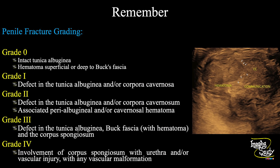The take-home message: there are five grades of penile fracture. On grade 0, there will be intact tunica albuginea and you will see hematomas superficial or deep to Buck's fascia. On grade 1, there will be a defect in the tunica albuginea and corpora cavernosa. On grade 2, like our case, you get a defect in the tunica albuginea and corpora cavernosa with associated peri-albugineal and cavernosal hematoma. On grade 3, there will be a defect in Buck's fascia and corpus spongiosum. On grade 4, there will be involvement of the corpus spongiosum with the urethra, which may or may not include vascular injury or vascular malformation.